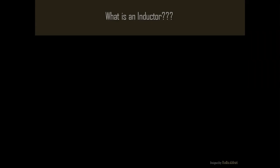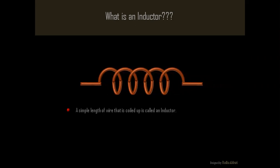What is an inductor? When a piece of wire is wound in the form of a coil, it is called as an inductor. It stores energy in the form of magnetic field. It opposes the change in current. It allows DC and blocks AC.